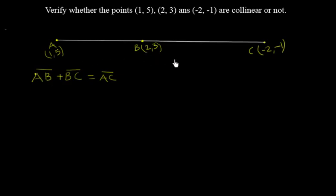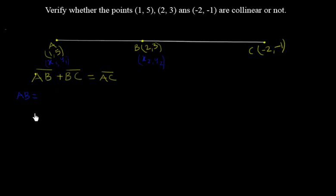Let me find the distance from A to B. I take A as (X1, Y1) and B as (X2, Y2). We already learned the distance formula: the distance equals the square root of (X2 minus X1) squared plus (Y2 minus Y1) squared. Let me apply the same here.